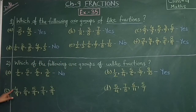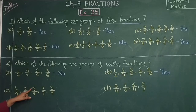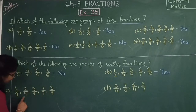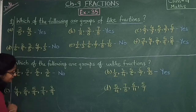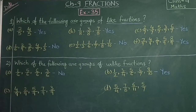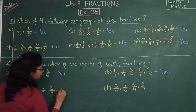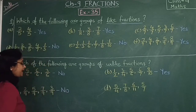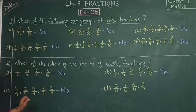See the next: 4 by 9, 2 by 9, 5 by 9, 7 by 9, 3 by 9. The denominator is the same — 9, 9, 9, 9, 9. So is this an unlike fraction? No. Because this is a like fraction, not an unlike fraction.